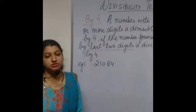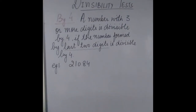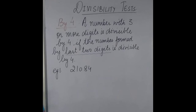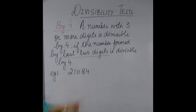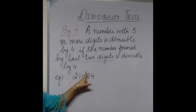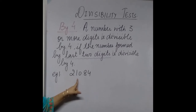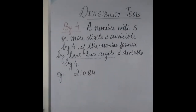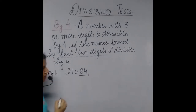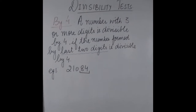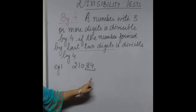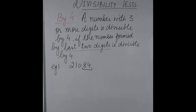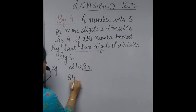Good morning children, today we are going to start with the divisibility test of 4. The divisibility test of 4 says that a number with 3 or more digits is divisible by 4 if the number formed by the last 2 digits is divisible by 4. For example, if we have the number 21084, we check the number formed by the last 2 digits, which is 84. We can check this using multiplication tables or the division method.